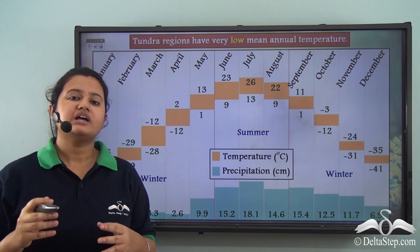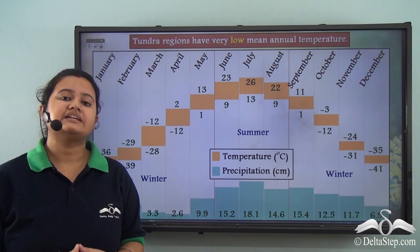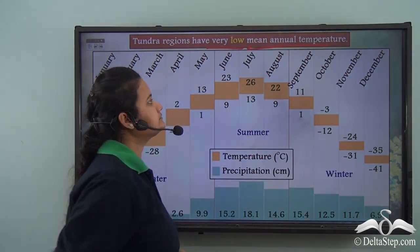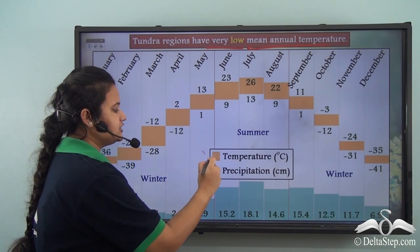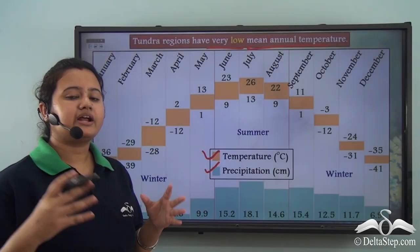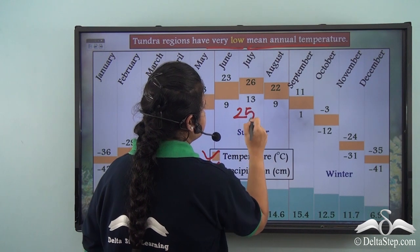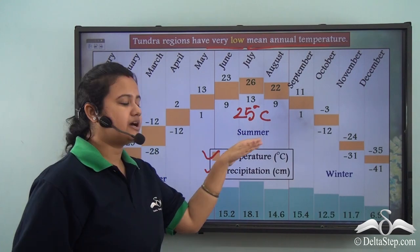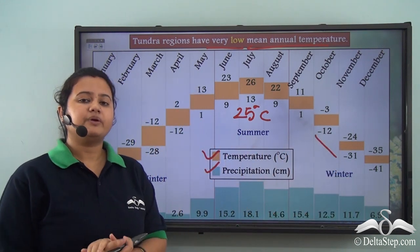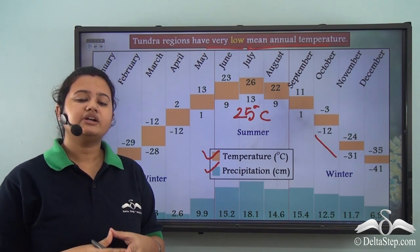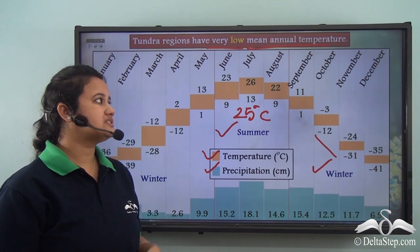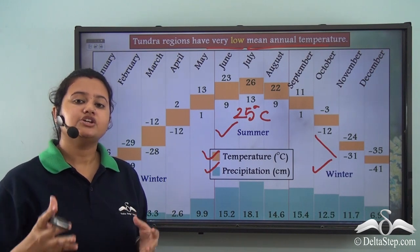Since Tundra region lies very close to the North Pole and receives very slanting rays of the sun, the mean annual temperature of this region is very low. This chart displays the temperature and precipitation conditions of this biome, and we can see that temperature is indeed very low around the year. Warm temperatures of about 25 degrees Celsius prevail only for shorter durations during summer months, whereas extremely low temperatures — usually below freezing point — prevail for the longer part of the year. Tundra region thus experiences two distinct seasons: a short summer of hardly three months and a long winter of around nine months.